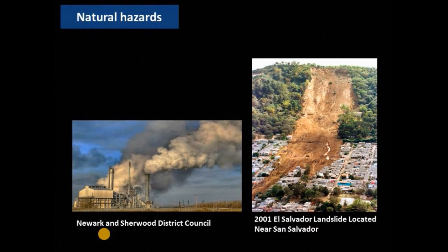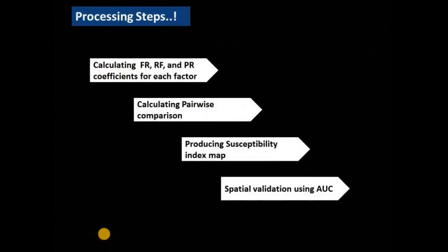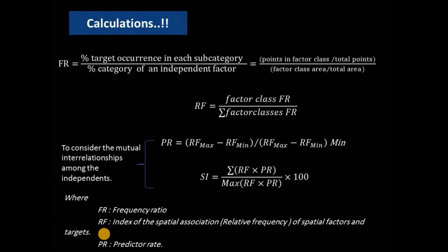Most common applications of frequency ratio or bivariate statistical methods include natural hazards like air pollution or landslides, and also within mining and groundwater exploration — we can see a lot of literature about preparing susceptibility maps. Today, I will start to calculate the frequency ratio, relative frequency, and prediction rates for each of the coefficients, then calculate the extra step about a pairwise conversion. Later, we will produce a susceptibility map index in ArcGIS, and the validation of our maps using Microsoft Excel.